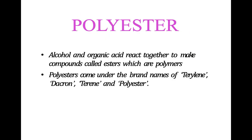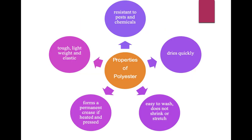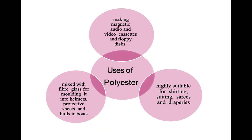Next is polyester. Alcohol and organic acid react to make compounds called esters which are polymers, sold under brand names such as Terylene, Dacron, and Terene. Properties of polyester: resistant to pests and chemicals, dries quickly, easy to wash, does not shrink or stretch, forms a permanent crease if heated and pressed, and is tough, lightweight, and elastic. Uses include magnetic audio in videocassettes and floppy disks, shirting, suiting, sarees, draperies, and mixed with fiberglass for helmets, protective sheets, and hulls in boats.